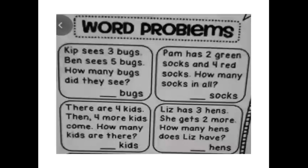Pam has 2 green socks and 4 red socks. 'In all' indicates addition. 2 plus 4 is 6. So 6 socks in all. There are 4 kids, then 4 more kids come. How many kids are there? 4 fingers, 4 in mind. 4 plus 4: 5, 6, 7, 8. Total 8 kids.